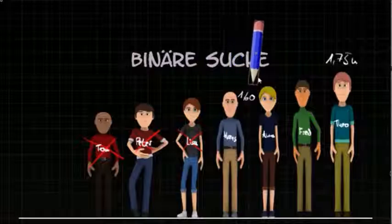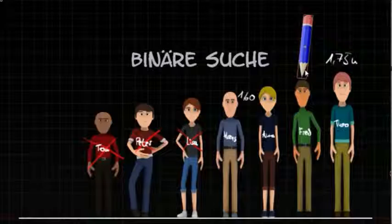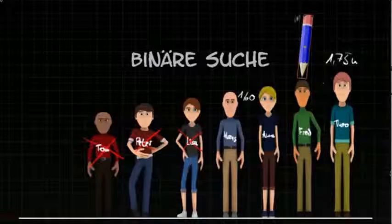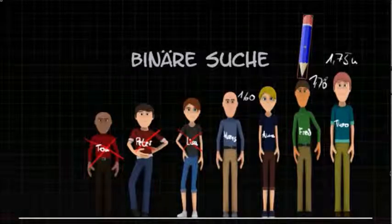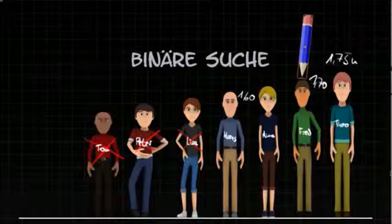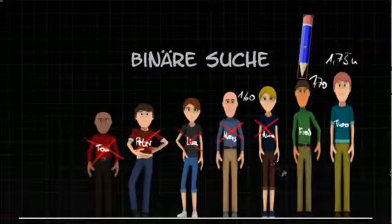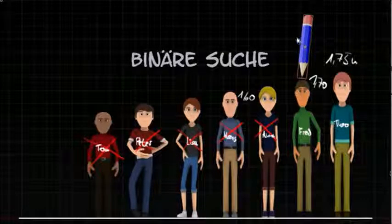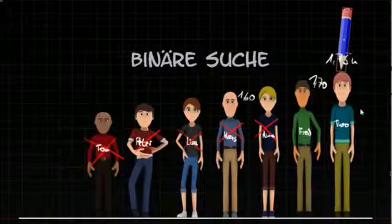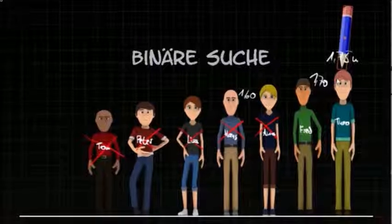Again we take the middle element of the remaining elements, and in this case this is Fred. We can see Fred is 1 meter and 70 centimeters tall. Again we can say that we don't have to search to the left of Fred. We only have to search to the right, and there only one person remains — and now we find Theo, as the first person we wanted to find, with 1 meter and 75 centimeters.